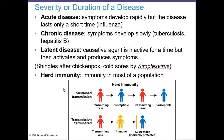Herd immunity is immunity in most of the population. When you think about sustained transmission, you always have one sick person that infects a susceptible person, and that person can then infect others, keeping the chain going. Even if two people are not close enough to make direct contact, the chain continues through intermediate carriers.